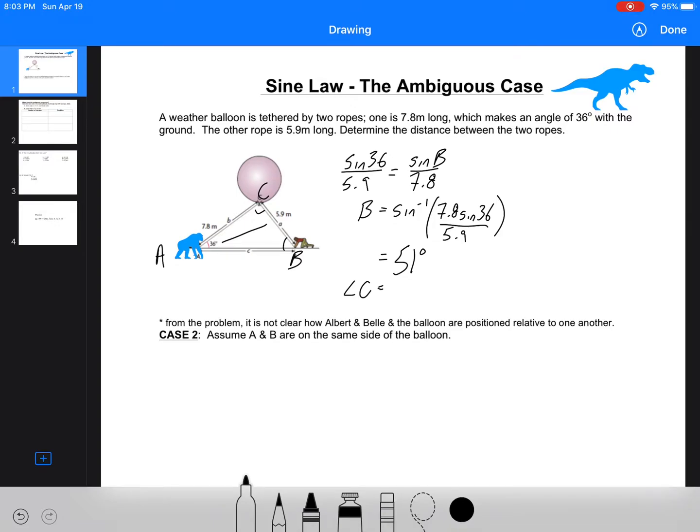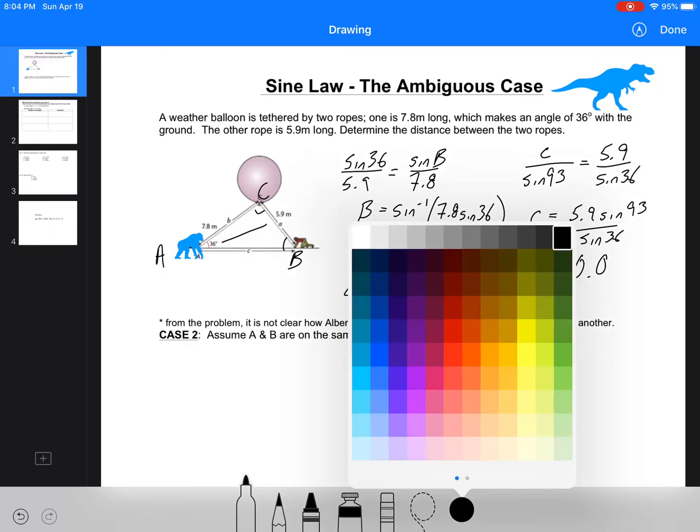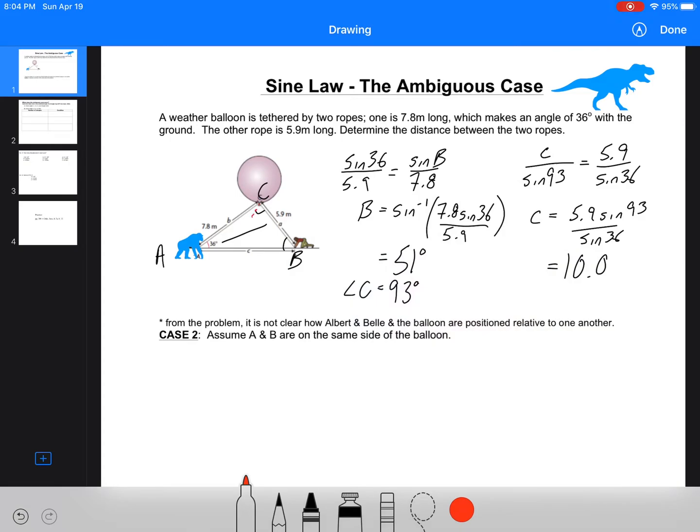So then that means that angle C is going to be 180 minus 51 minus 36, and that's 93 degrees. So with that, we can take angle C, and we can say C over sine C, so C over sine 93 equals 5.9 over sine 36, and then C equals 5.9 sine 93 over sine 36, and we're going to get 5.9 divided by sine 36, and we get almost 10 exactly. We get 10.02, so we'll just write 10.0.